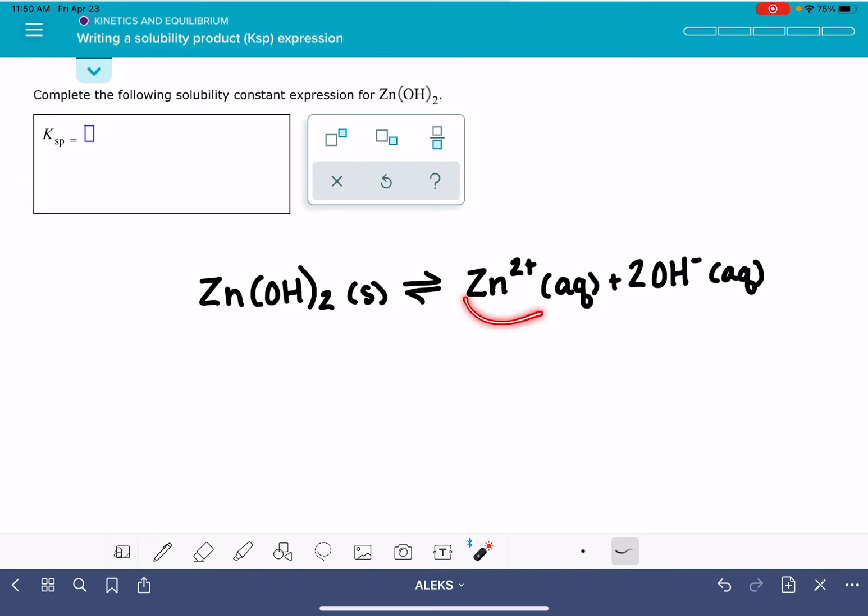Once you get the products figured out for this, then you are just going to write the Ksp equilibrium expression using the same rules that we always do. It's going to be the concentration of the products over the concentration of the reactants, except for our reactant is a pure solid, which means we'll be leaving it out. So it's just going to be our products, and also make sure to raise everything to their stoichiometric coefficients.